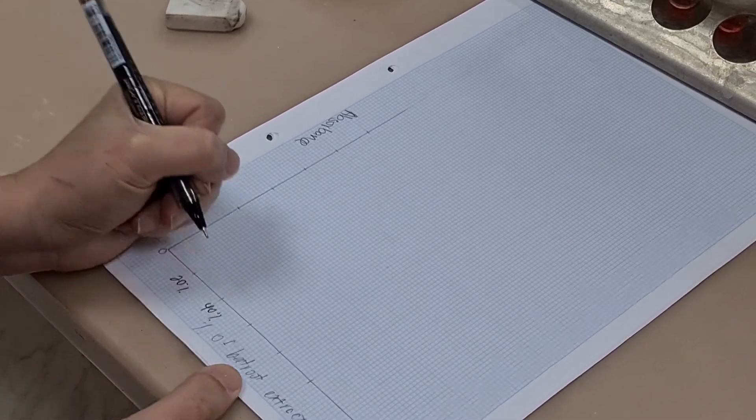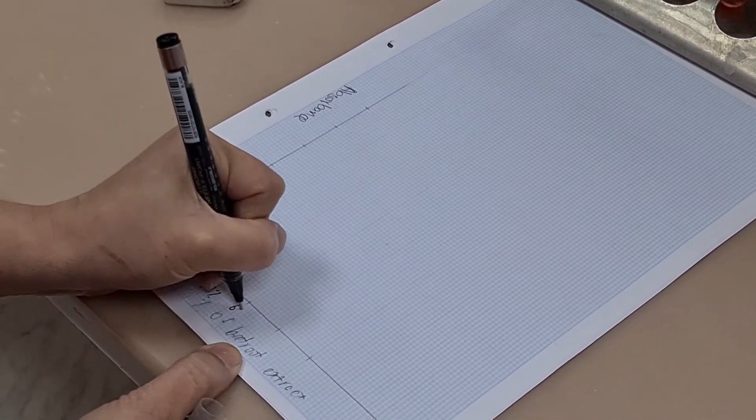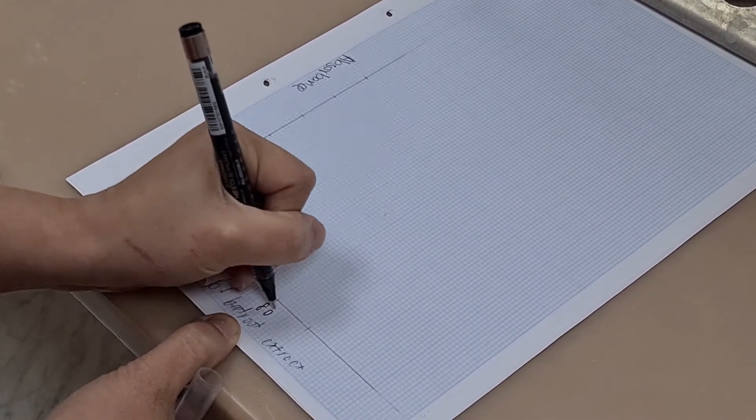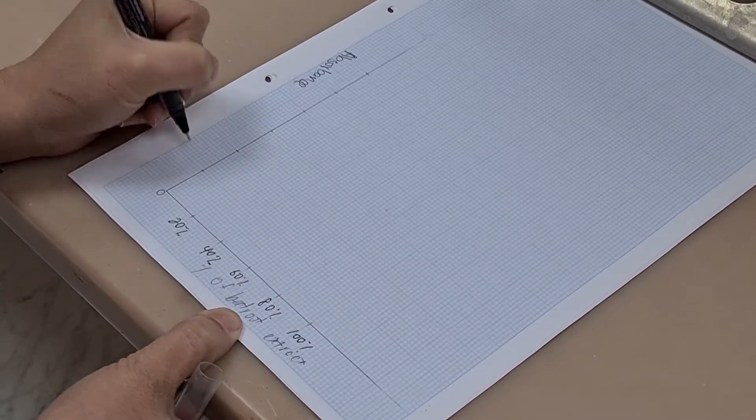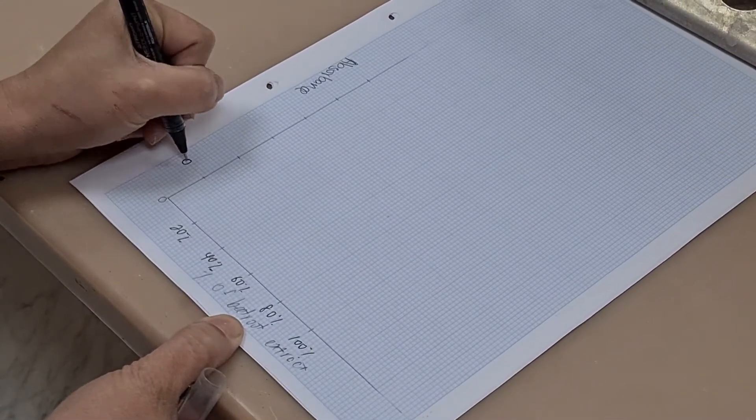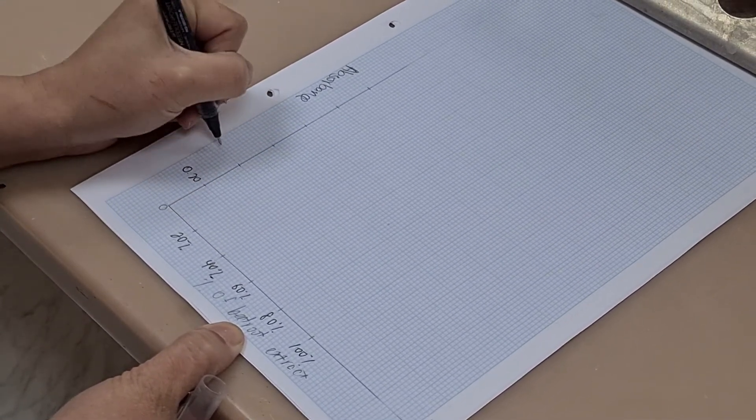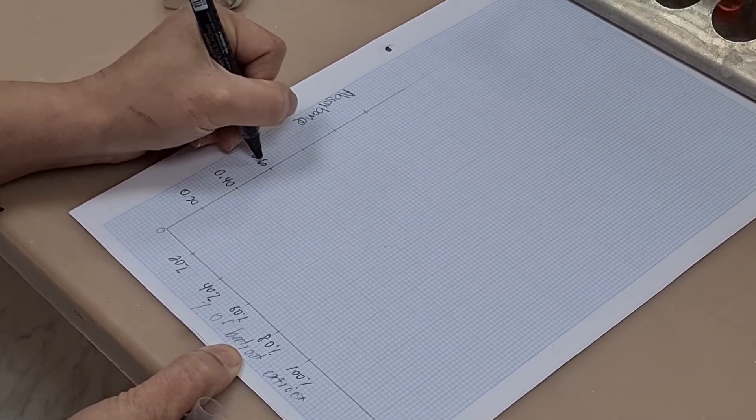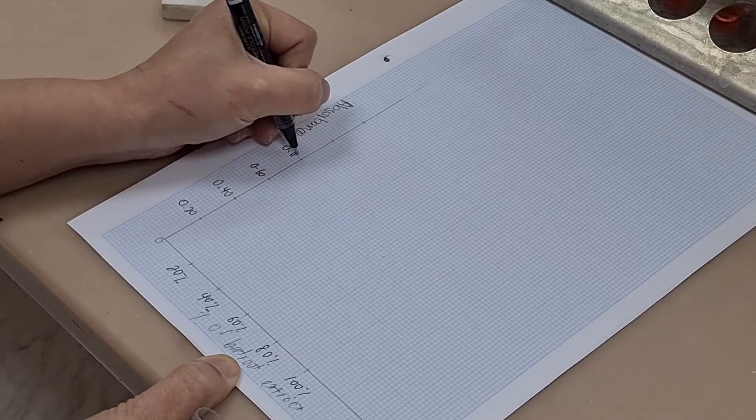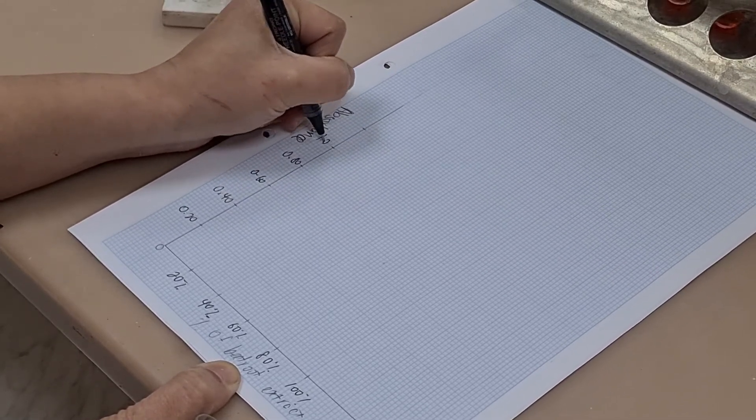So to summarize the answer to the question, why do we produce a calibration curve? We produce a calibration curve to identify the concentration of unknown substances. And how do we do that? We use known concentrations to plot a graph of absorbance.